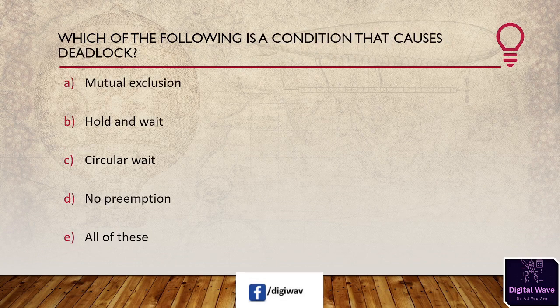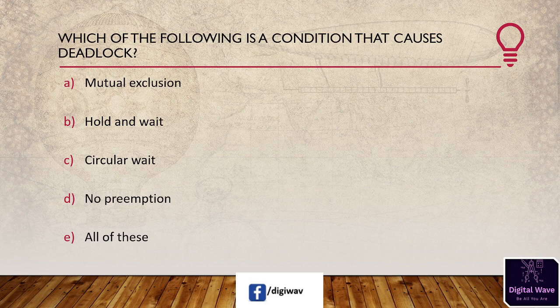Next question: which of the following is a condition that causes deadlock? Options: mutual exclusion, hold and wait, circular wait, no preemption, all of these. The right answer is all of these.